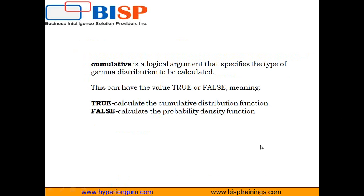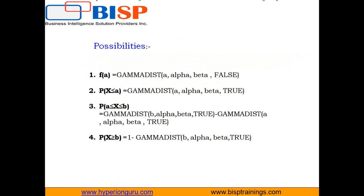This function has four use cases. If given a value a, we simply calculate the gamma distribution using GAMMA.DIST and pass cumulative as FALSE. If x is less than or equal to a, the cumulative value will be TRUE. If x lies between a and b, the gamma distribution is calculated as GAMMA.DIST(b, alpha, beta, TRUE) minus GAMMA.DIST(a, alpha, beta, TRUE). If x is greater than or equal to b, we calculate 1 minus GAMMA.DIST(b, alpha, beta, TRUE).